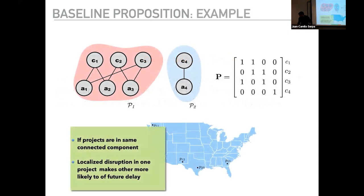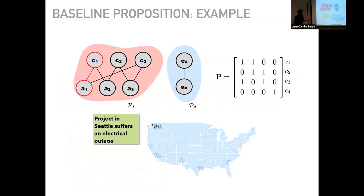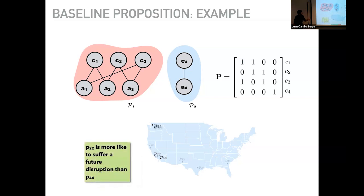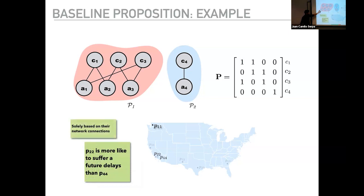In other words, if projects are in the same connected component, a localized disruption in one project will make all other projects more likely to experience delays in the future. So if a disruption occurs here in Seattle, and we have two identical projects in San Diego — project p-prime and project p-double-prime — this project in San Diego that is connected through the network to the Seattle disruption is more likely to observe a delay than the other one. This is an empirically falsifiable hypothesis we can observe in the data.